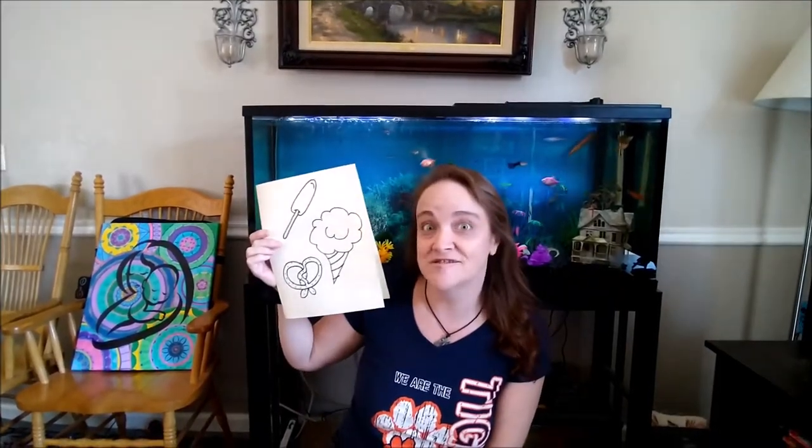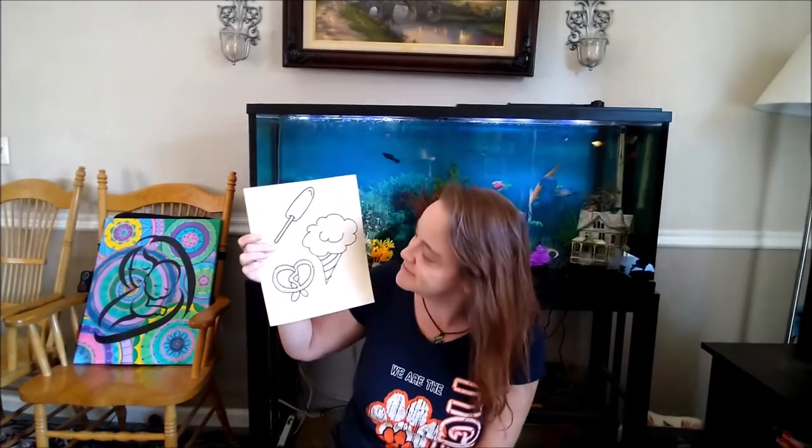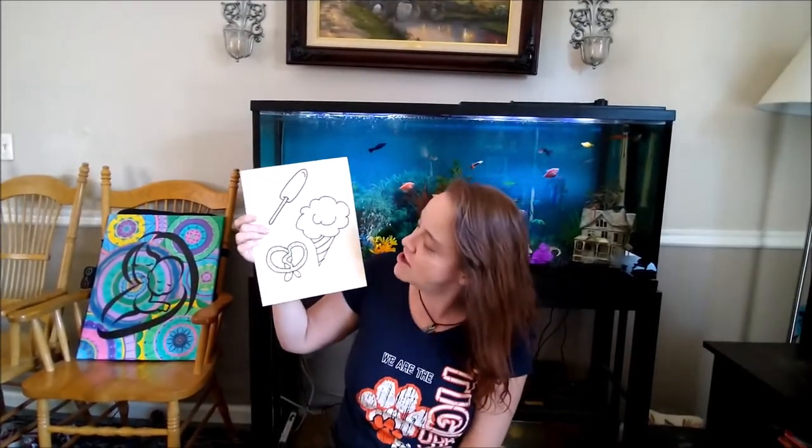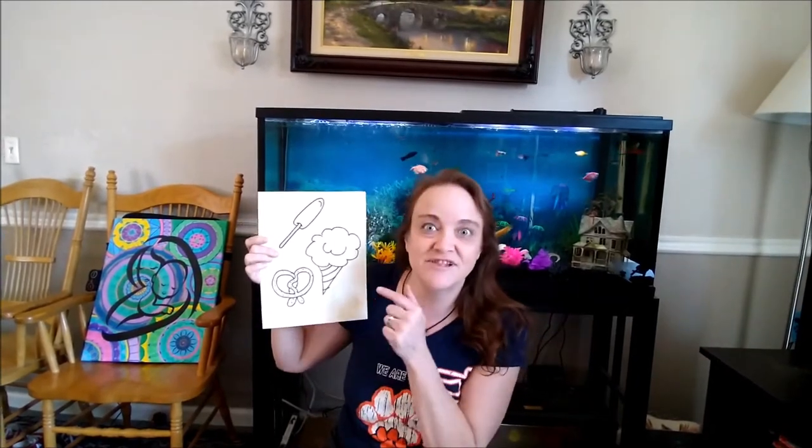Today, Spinelli Tigers, we are going to draw some of those yummy foods that you've been reading about in Ms. Snyder's class that are at the amusement park. We're going to do a corn dog, some cotton candy, and one of those yummy twisted pretzels. So make sure your hands are clean and you've got a nice space around you and let's get started.